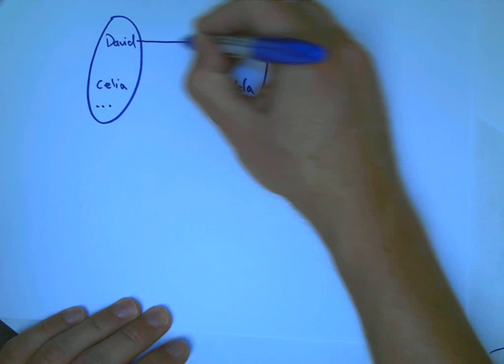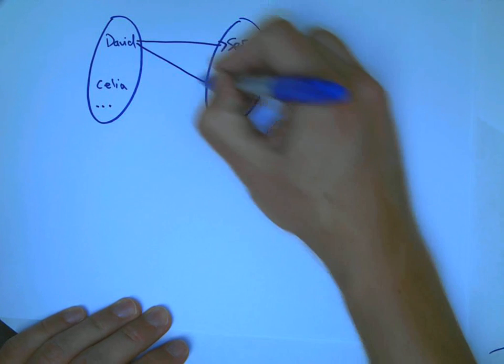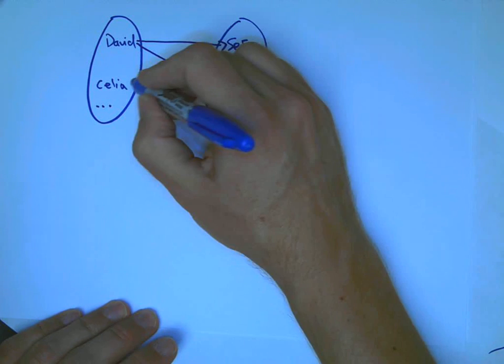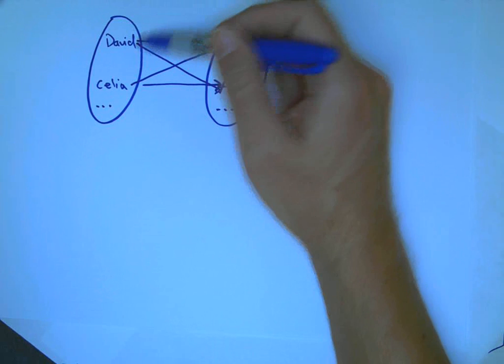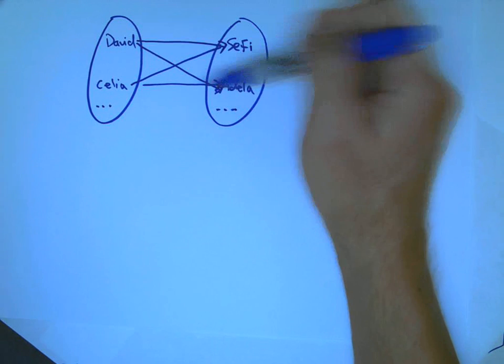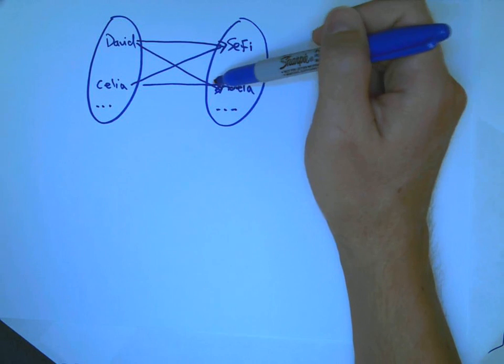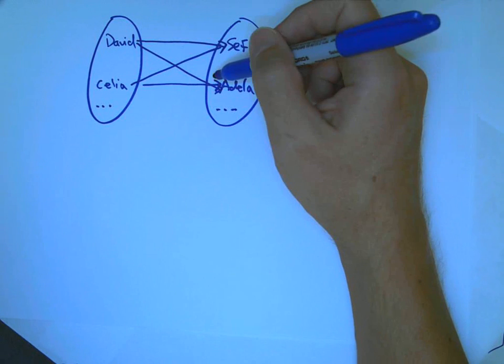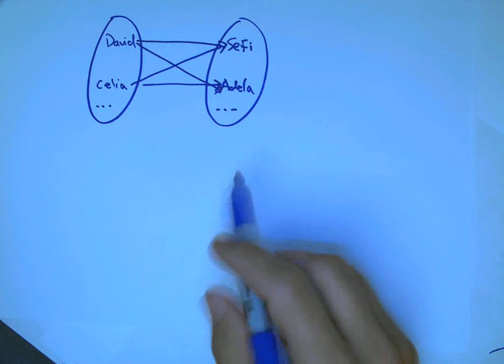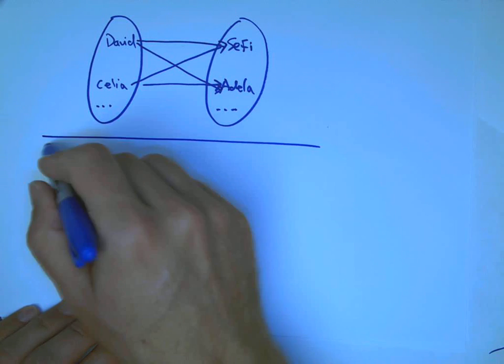And so, David, you put an arrow to Sephie saying, yes, David is the parent of both of these people. Celia is the parent of both of these people. And the fact that two, there's this input that gets two outputs, that automatically means it's not a function. If it ever happens that one input gives more than one output, it disqualifies it from being a function.